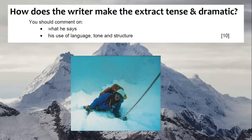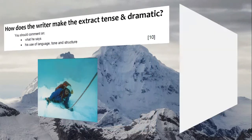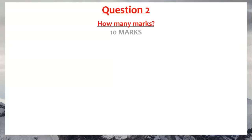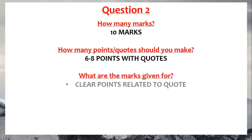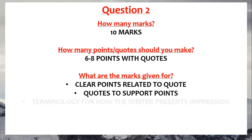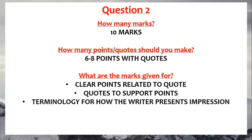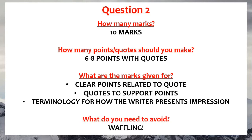The question is: how does the writer make the extract tense and dramatic? You should comment on what he says and his use of language, tone, and structure. Question 2 is worth 10 marks. You should be making 6 to 8 points with the same amount of quotes. You get marks for clear points related to quotes, quotes to support points, and terminology — and what do you need to avoid? Waffling.